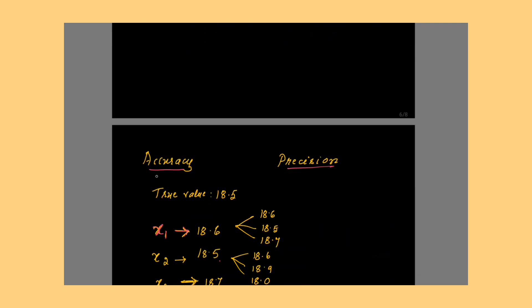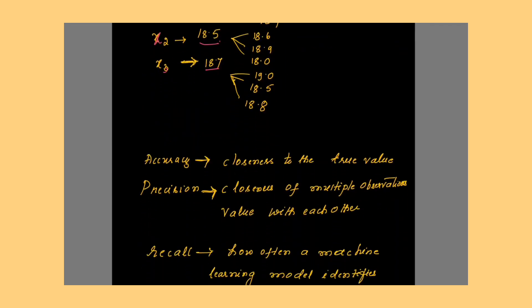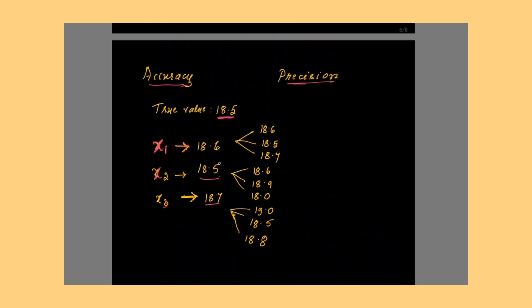What is the difference between these three terms? I will just give you a simple example, the difference between accuracy and precision. Suppose if the true value or the target value is 18.5, let us assume that for a particular experiment in chemistry lab or physics lab, the expected value or correct value the students need to get is 18.5 for some experiment. Student 1, x1, has got the value 18.6, which is very close to 18.5. Student x2 has got the value 18.5, which is exactly the same as the true value, so it is more accurate. Next is x3. Student x3 has got a value 18.7, which of course is not having that much accuracy. How do you define accuracy? Accuracy is closeness to the true value.